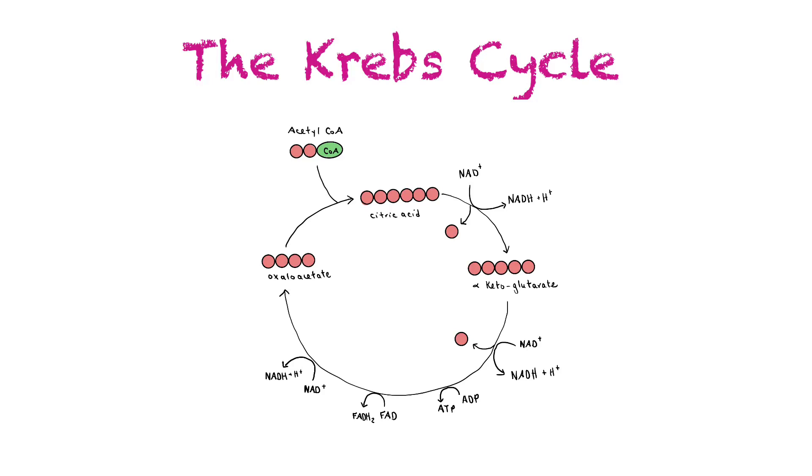It can also be called the citric acid pathway because the first product in the cycle is citric acid. It can also be called the tricarboxylic acid pathway because citric acid has three carboxyl groups, or it can be called the TCA pathway. But for our purposes we're just going to call it the Krebs cycle.